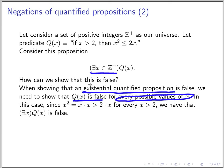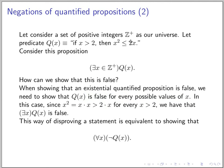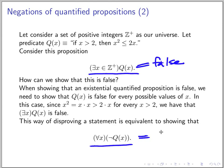To show an existentially quantified proposition is false, you must show Q(x) is false for every possible value of x. In this case, x² = x·x > 2x for every x > 2, so there is no x satisfying Q(x). We'll learn more about how to prove and disprove such statements, but the key point is: to disprove 'there exists x such that Q(x),' you must show 'for all x, not Q(x) is true' — and these are negations of each other.